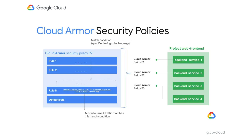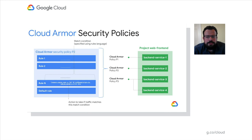To add layer 7 protection, configure a Cloud Armor security policy and attach it to the backend service hosting the application or workload to be protected. There is a one-to-many relationship between policies and backends, meaning one policy can be attached to multiple backend services, but each backend can only have one security policy protecting it. Each policy consists of a prioritized list of rules as well as a default rule. Cloud Armor will evaluate each rule in priority order; the first matching rule will win and dictate the action — allow or deny. If the traffic doesn't match any rules, the default rule action is applied.